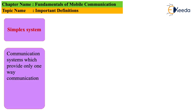Simplex systems. Communication systems which provide only one-way communication are known as simplex systems. Examples include broadcasting systems like radio and television, where there is only one-way communication.